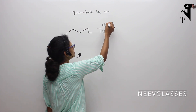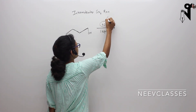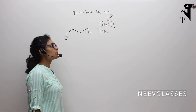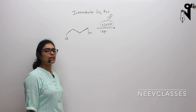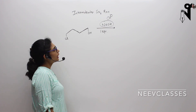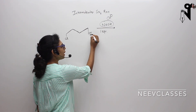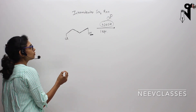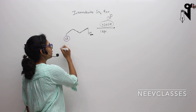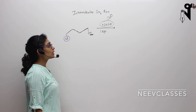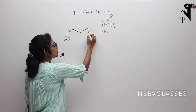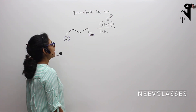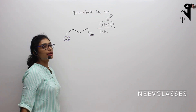So what will happen? This NaOH will basically create OH-. This OH- can act as a base also and can act as a nucleophile also. If it will act as a base, it will pull out the hydrogen from here. And if it will act as a nucleophile, it will kick out the chlorine from here. So it has two options: one is removal of this hydrogen by acting as a base, and other is removal of chlorine by acting as a nucleophile.